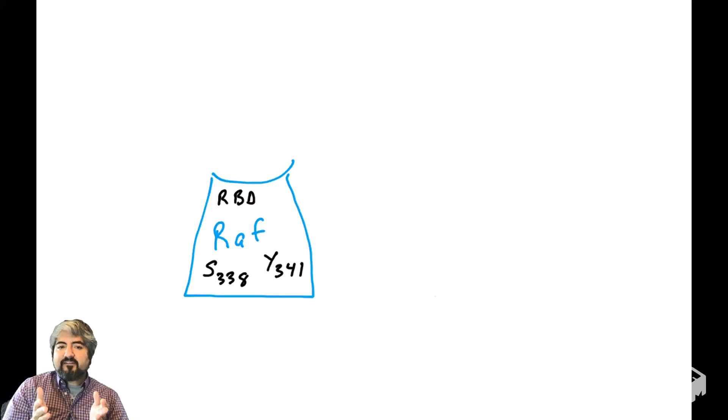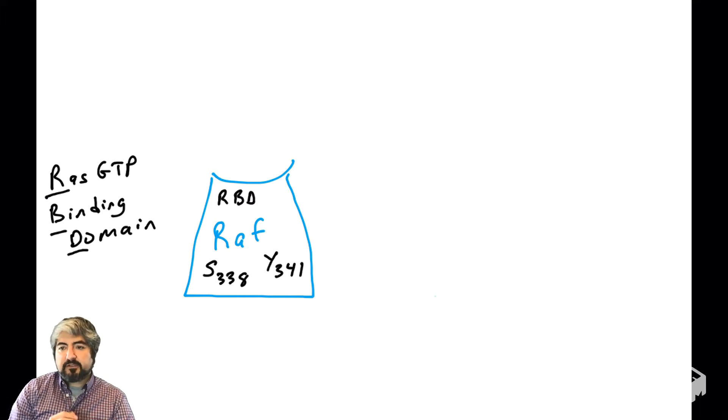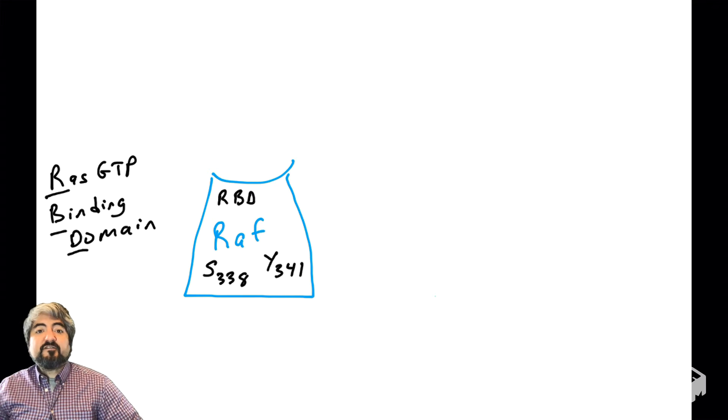I'm going to draw RAF here. I've added two specific amino acids: a serine at position 338 and a tyrosine at position 341. I've also added a domain to RAF called RBD. What does that stand for? That is the RAS GTP binding domain. Proteins have domains, and domains allow proteins to have certain functions.